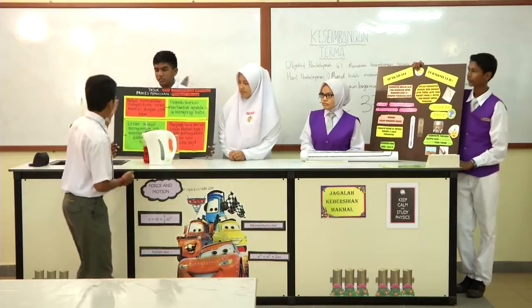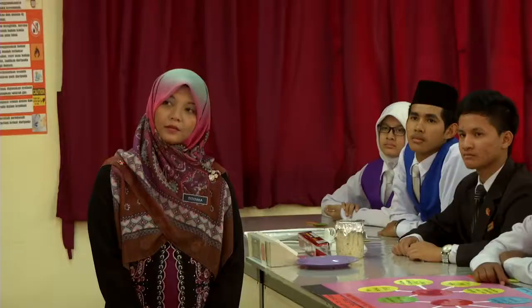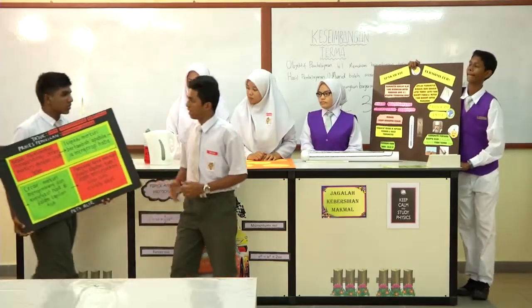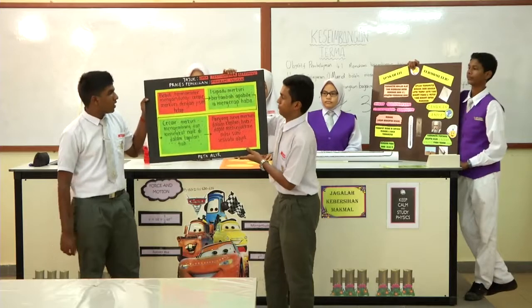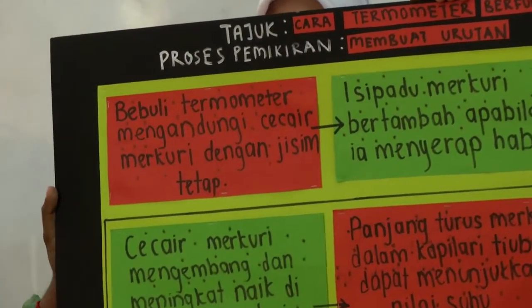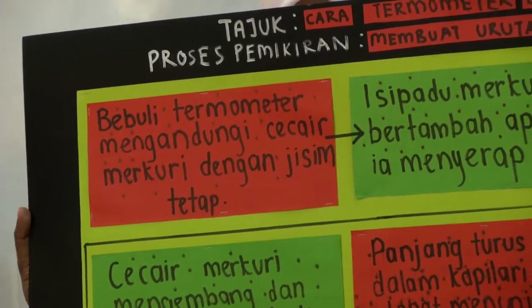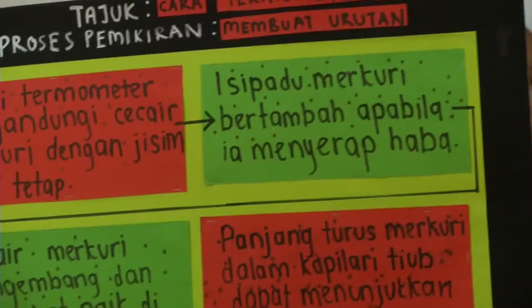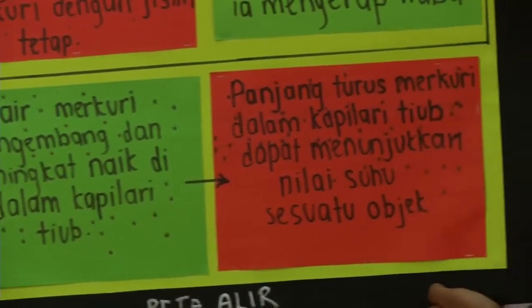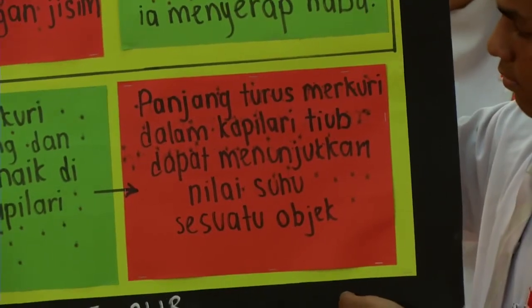Pembentangan yang terakhir adalah daripada saudara Arvindan Prabu yang akan membentangkan tentang cara termometer berfungsi, dengan menggunakan peta alir iaitu proses pemikiran membuat urutan. Bebuli termometer mengandungi cecair Mercury dengan jisim yang tepat. Isi padu Mercury bertambah apabila dipanaskan. Cecair Mercury mengembang dan meningkat naik di dalam tiub kapilari. Panjang turus Mercury dalam tiub kapilari akan menunjukkan nilai suhu sesuatu benda.